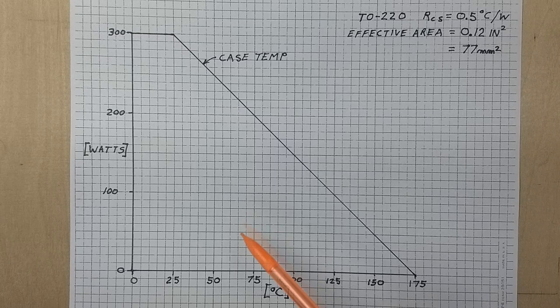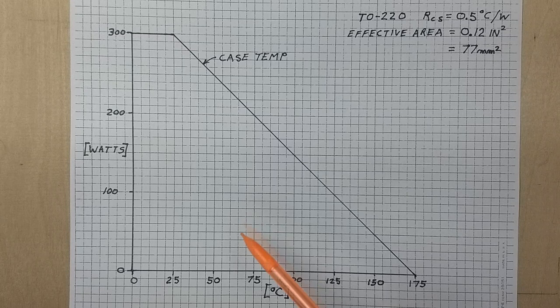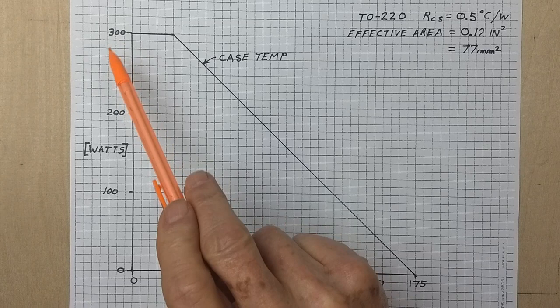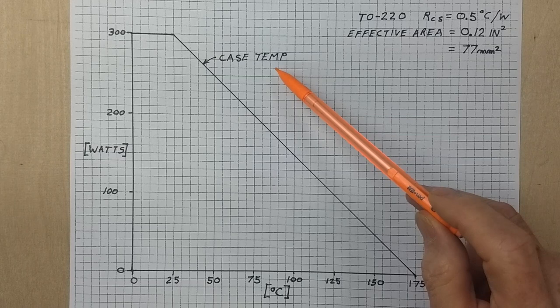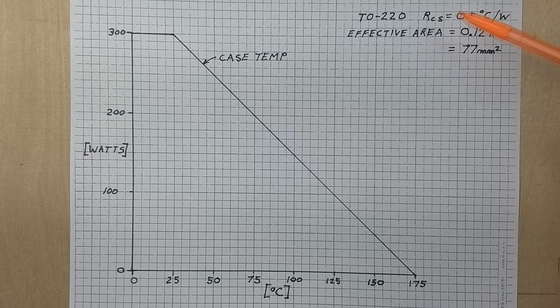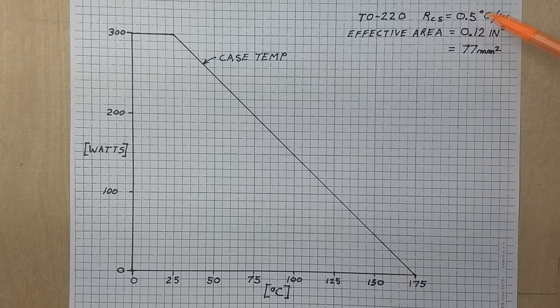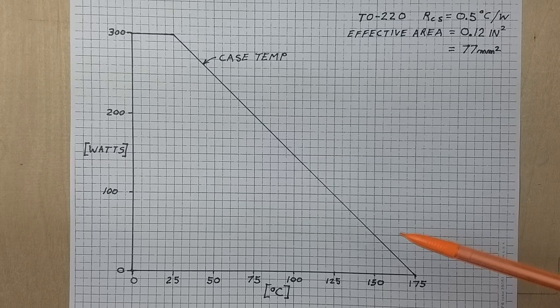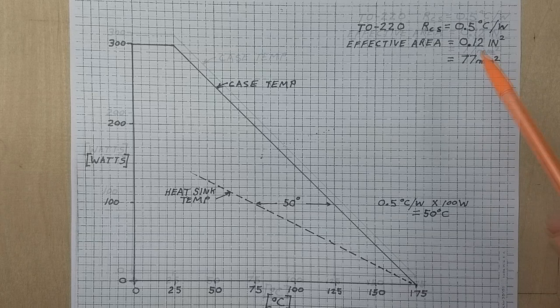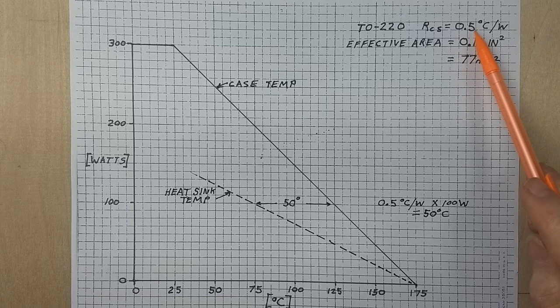Now here's a plot of the case temperature versus watts dissipated. Now that's the case temperature, not the heat sink temperature. And the data sheet told us that the thermal resistance between the case and the heat sink is 0.5 degrees C per watt. And that means the heat sink has to be cooler than any temperature on this curve in order to get rid of the heat.